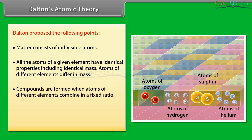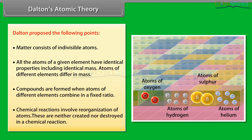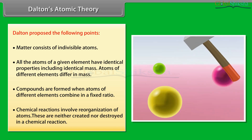Fourth, compounds are formed when atoms of different elements combine in a fixed ratio. Fifth, chemical reactions involve the reorganization of atoms; these are neither created nor destroyed in a chemical reaction.